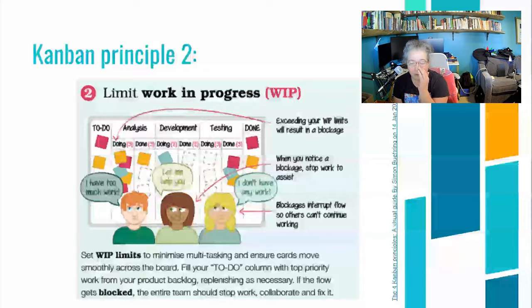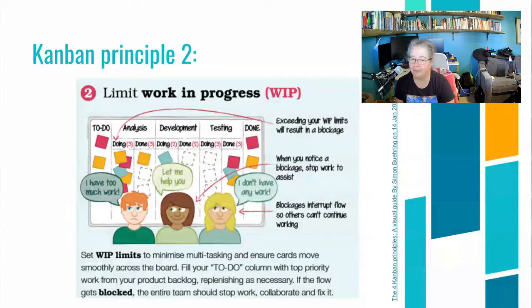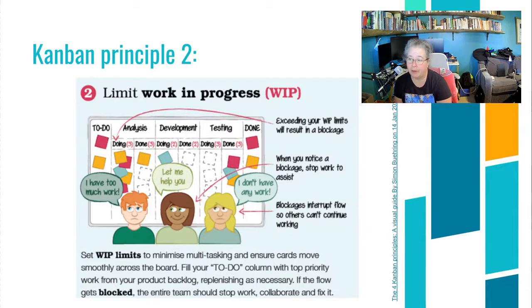Kanban principle number two is to limit how much work is always in progress and get it done — move it to the done area. These little speech bubbles represent common things that happen in collaboration: I have too much work, I don't have any work, or how can I help you? These are called blockages in Kanban. So Trello helps us move through those blockages.